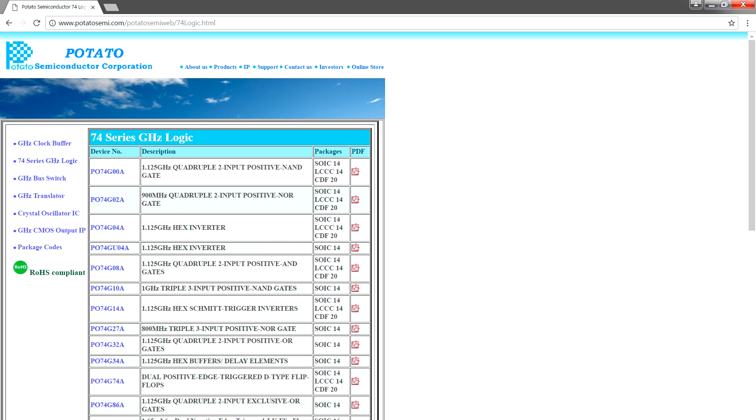Potato specializes in taking old school 74 series logic chips from the 1970s and updating the design so that they can work at frequencies of 1 GHz and beyond.